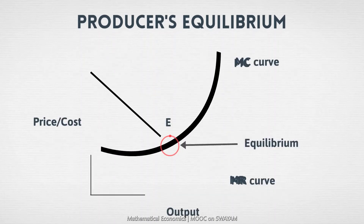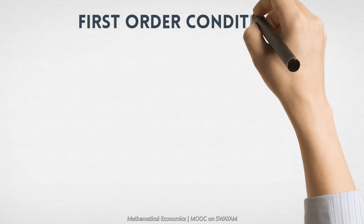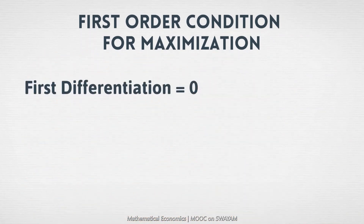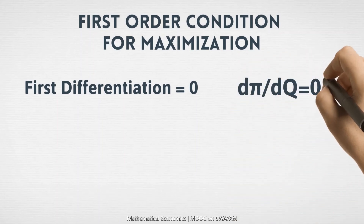We have seen that at E, MR is equal to MC. Also, the slopes of the MR and MC curves are equal. Let us express this condition mathematically. Recall that the first order condition for maximization requires the first derivative to be equal to zero.